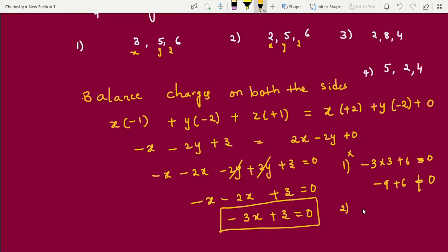Next, second option. Minus 3 into 2 plus 6 equal to 0. Is it 0? Yes, it is 0. Minus 6 plus 6 equal to 0. If this option is getting 0, that is your answer. Clear students. Very easy. Less than 1 minute you can solve such type of questions.